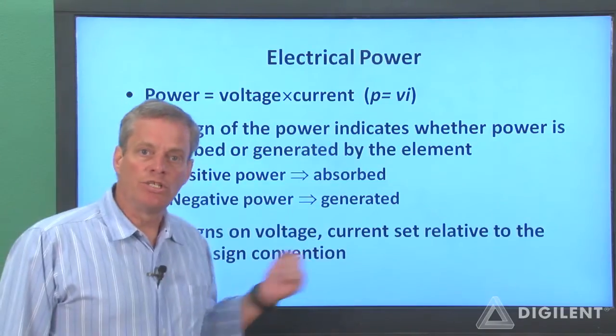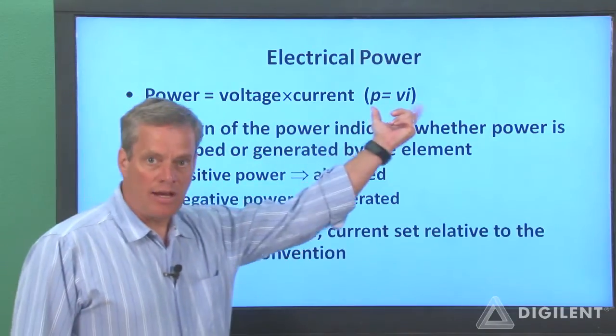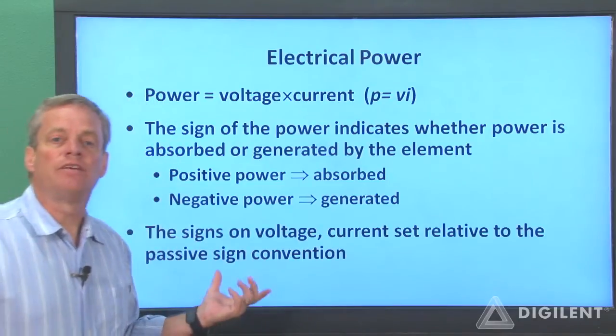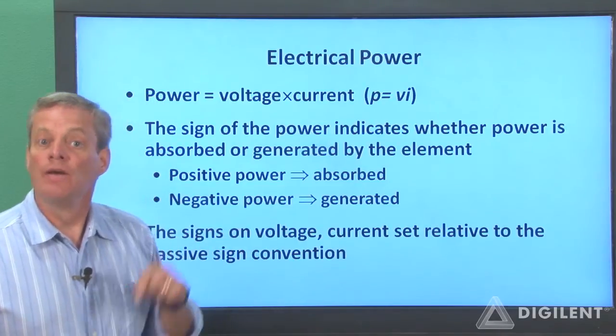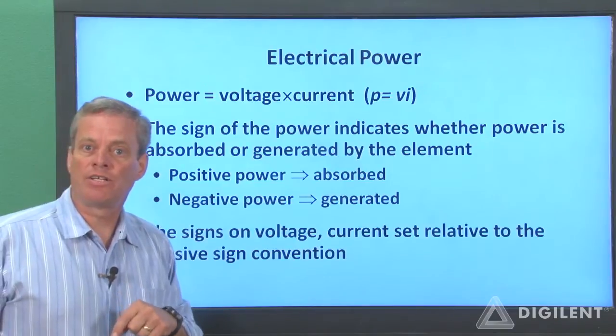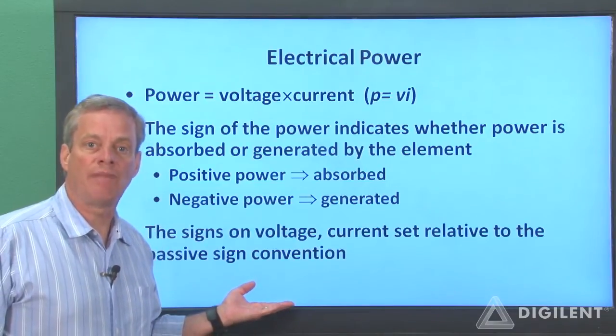The sign of the voltage and the current used in the power calculation is based on the assumed voltage polarity and current direction. The assumed voltage polarity and current direction must be chosen according to the passive sign convention.